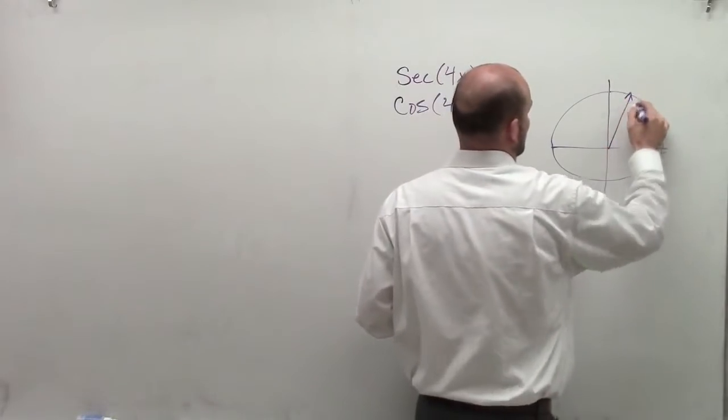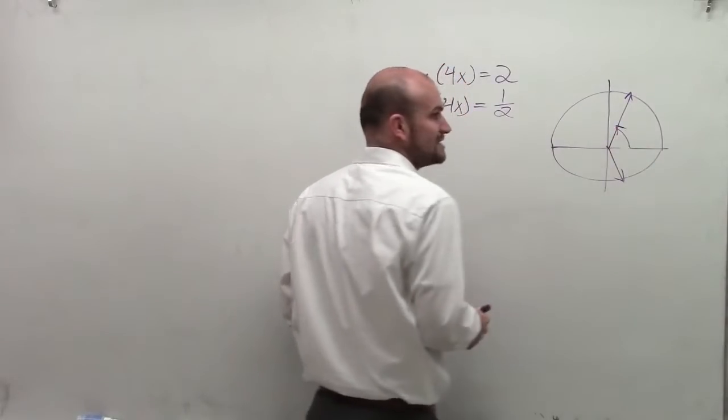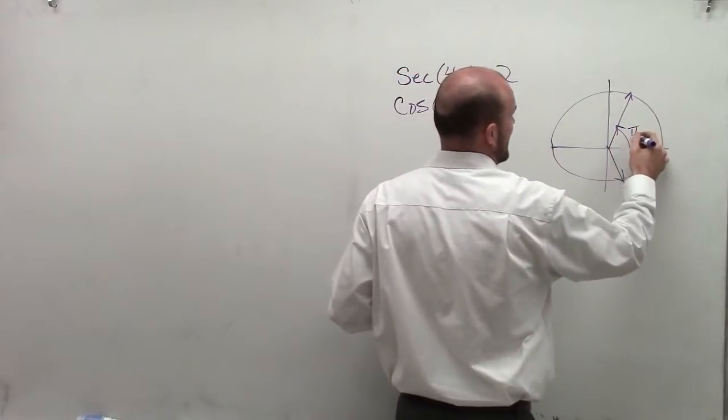Well, I'm going to have one angle here and then I'm going to get another angle down here. So this first angle, cosine equals 1 half is at pi over 3.